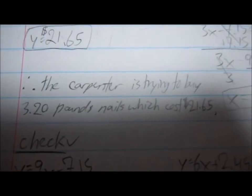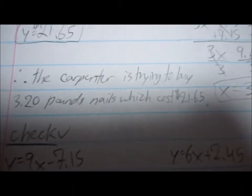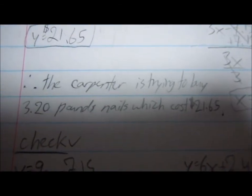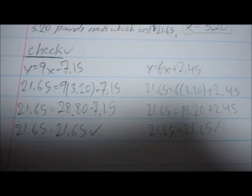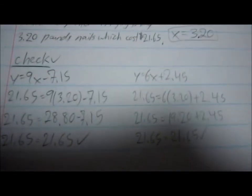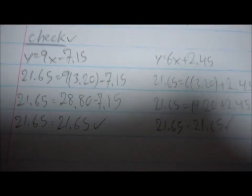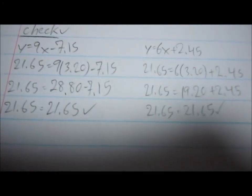Therefore, the carpenter is trying to buy 3.20 pounds of nails which cost 21.65 dollars. So this is my check right here. And what I did was just plug in the y and x values into both equations, and they both checked.